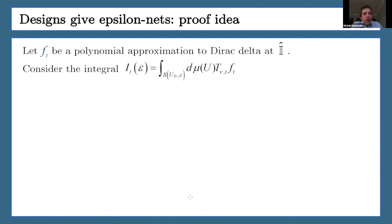I consider some polynomial approximation of the Dirac delta at identity of my group. I take the integral over the ball of radius epsilon localized around some unitary gate U zero. And here inside, you have this moment operator that acts on this function f. Now on one hand, if my ensemble would form a T design, then this integral is simply equal to the volume of the ball of radius epsilon around U zero.